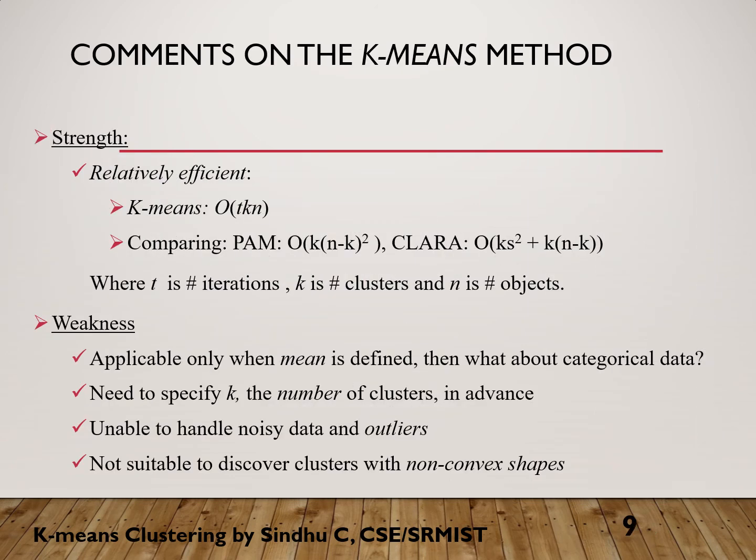The strength of the k-means method is that it is relatively efficient. Its complexity is O(T·K·N), where T is the number of iterations, K is the number of clusters, and N is the number of objects. Compared to PAM and CLARA, which are two other partitioning algorithms, k-means is better.